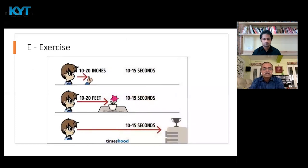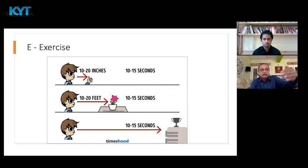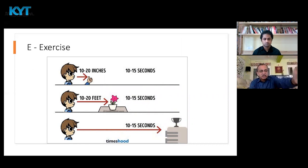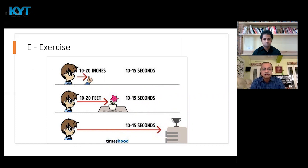E stands for Exercise — eye exercise is very simple. What you have to do is relax the muscles of the eye by looking at something close, then intermediate distance, then far off, and then back. Repeat this for about 5 minutes every few hours. That kind of exercise gives enough relaxation to the eyes. When you take a break, you can do this exercise.